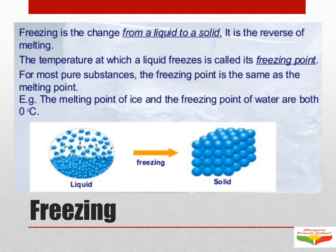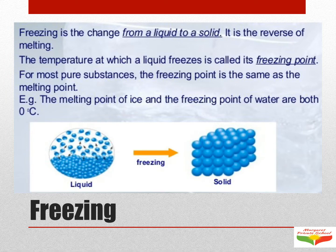Each pure substance has its own temperature at which it changes from liquid to solid. This temperature is called the freezing point. You should also know that the melting point for a given pure substance is the same as its freezing point. For example, table salt freezes and melts at the same temperature, which is 801 degrees Celsius.